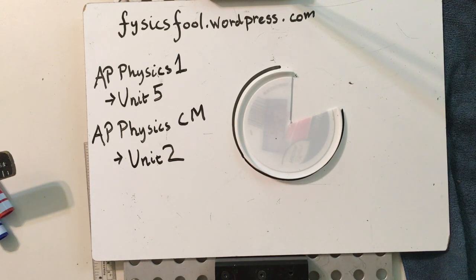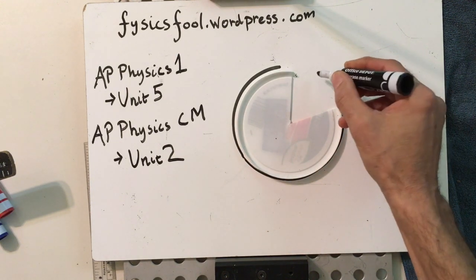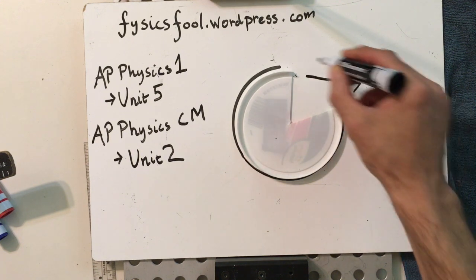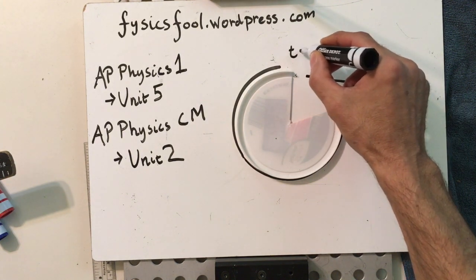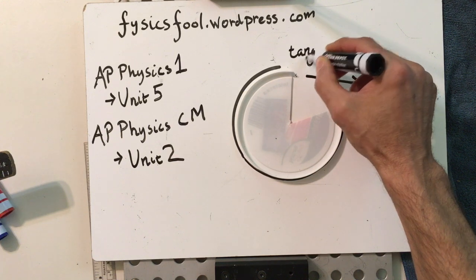Notice that every time I roll it, it follows a straight path that is tangent to the circle at the point where the circle ends.